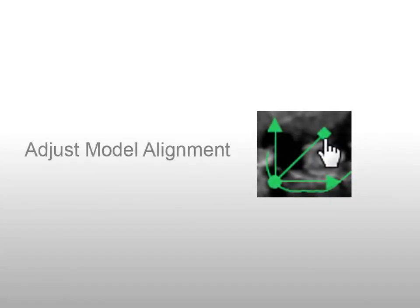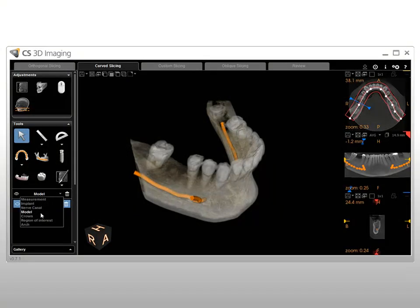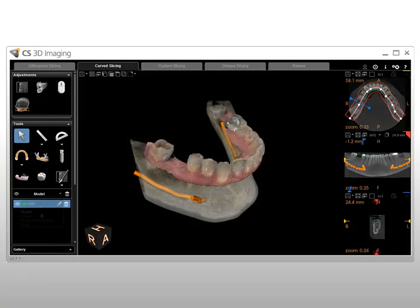You can manually adjust the automatic alignment of a model with the patient volume to refine the result based on careful analysis of the anatomical details. The virtual tools in CS3D imaging software are intended to enhance and simplify implant-supported restoration; however, no algorithm can replace the dental practitioner's experience and skill. To manually adjust the automatic alignment, in the Curve Slicing tab Tools panel, select a model from the drop-down list.